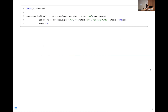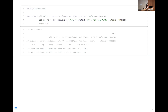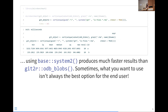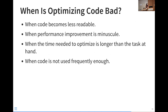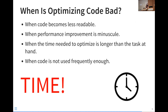I decided to compare base R's system2 — which allows you to use OS commands — against git2r's od_blobs using the microbenchmark package. What I found was that system2 was about 20 times faster than od_blobs. This taught me that what you want to use isn't always the best option for the end user. Can optimizing code be a bad thing? Here's a quote from Donald Knuth: 'Premature optimization is the root of all evil in programming.' It can be bad when your code becomes less readable, when the performance improvement is extremely small, when the time to optimize is longer than your actual task, or when code just isn't used frequently enough. It all boils down to whether the time and effort invested is worth it in the long run.